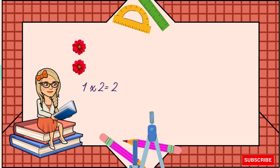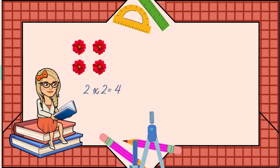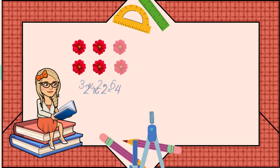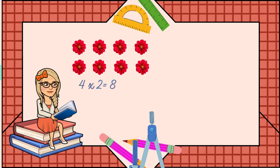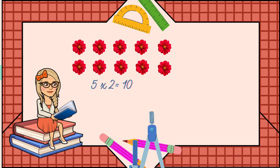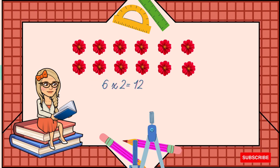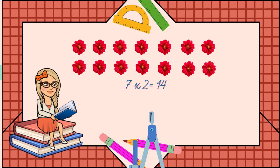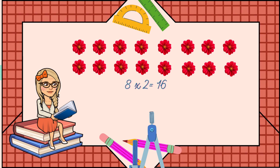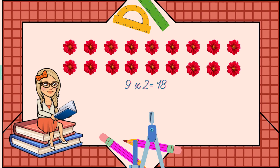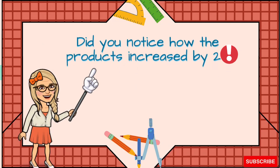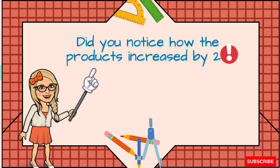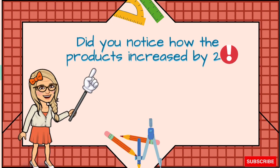Okay, let's begin: two, four, six, eight, ten, twelve, fourteen, sixteen, eighteen, twenty. Very good! Do you notice, guys, how the numbers that we were counting were increasing by two? This is exactly what happens when we multiply by two.